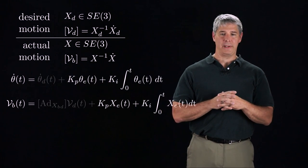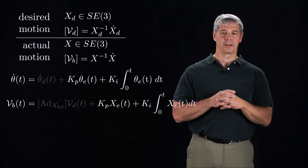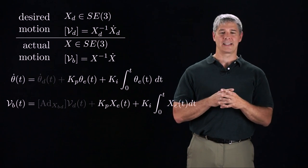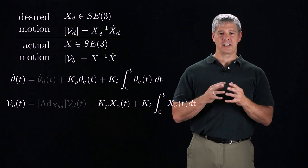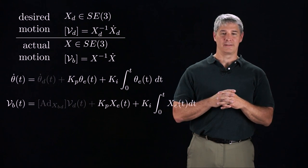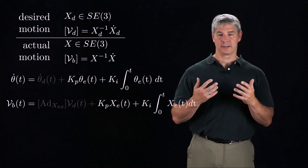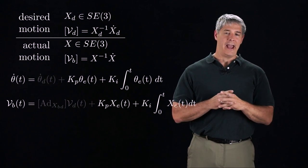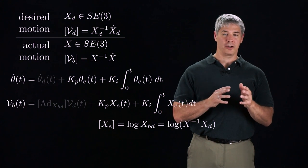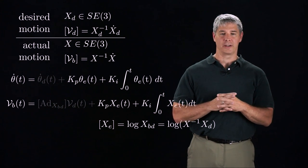Next, we add the PI feedback portion of the controller, replacing thetaE with Xe. The configuration error Xe is not an element of SE3. Just as thetaE represents a vector from the actual joint angles to the desired joint angles, Xe is a twist pointing from the current configuration to the desired configuration.